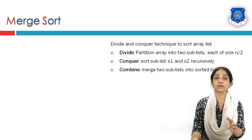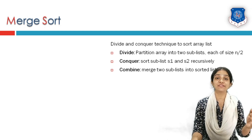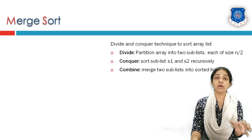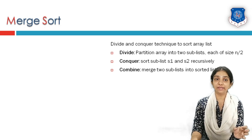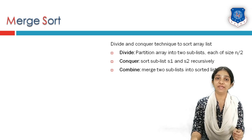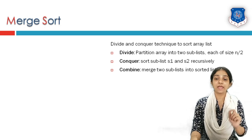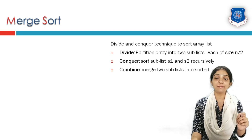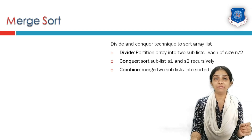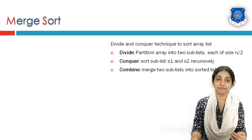In the divide stage, we partition a list or array into two equal parts, each of roughly size n/2. In the conquer stage, we keep subdividing the array recursively unless and until each sublist contains a minimum of one element.